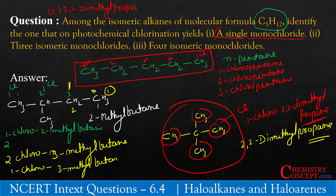The one which gives three isomeric monochlorides is N-pentane.